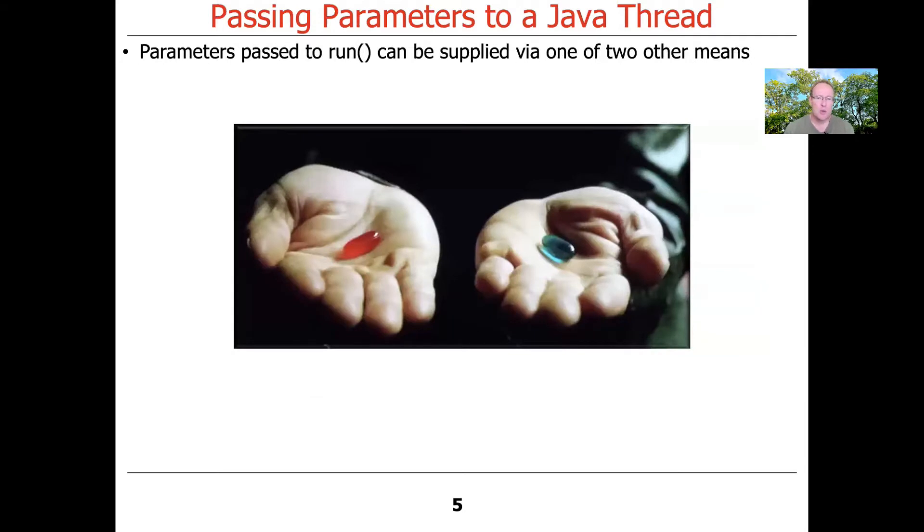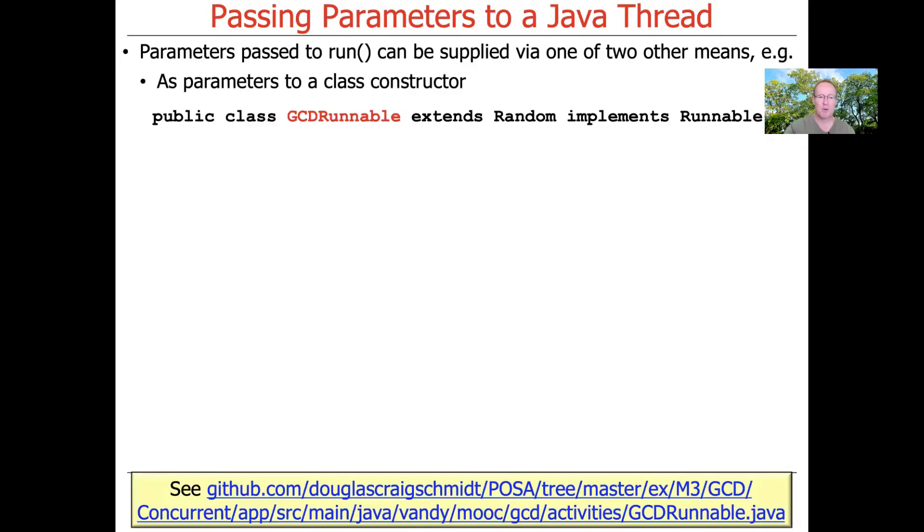So there's two general ways of passing parameters to threads. There's probably other ways to do it too, but these are the two most common ways of doing it. One is to pass parameters to a class constructor.